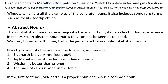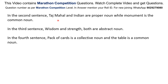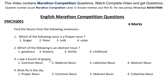Now try to identify the nouns in the following sentences. Siddhartha is a very intelligent boy. Taj Mahal is one of the famous Indian monuments. Wisdom is better than strength. The pack of cards is kept on the table. In the first sentence, Siddhartha is a proper noun and boy is a common noun. In the second sentence, Taj Mahal and Indian are proper nouns while monument is a common noun. In the third sentence, wisdom and strength are both abstract nouns. In the fourth sentence, pack of cards is a collective noun and table is a common noun.